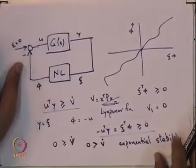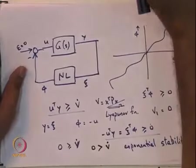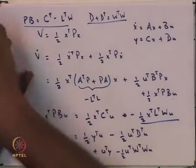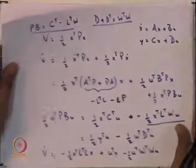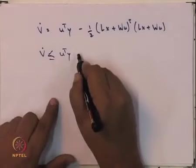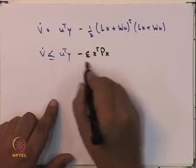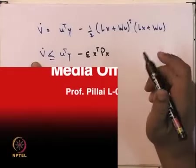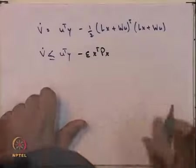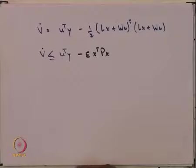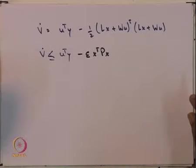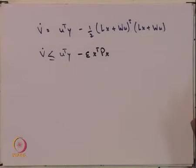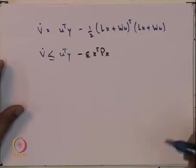Now if one assumes that G is strictly positive real, then in the equation A transpose P + PA there will be one additional term, which I call −epsilon P. This additional term will finally appear in the last equation as −epsilon X transpose PX. This will now let us prove that the resulting system is in fact asymptotically stable.